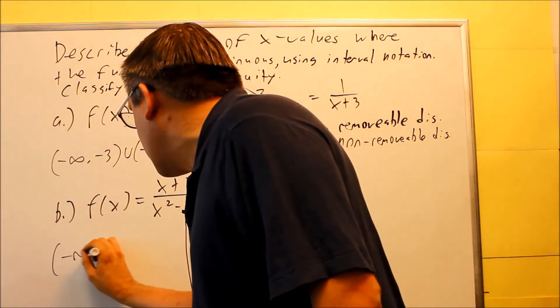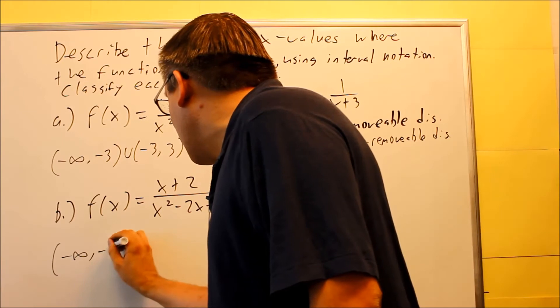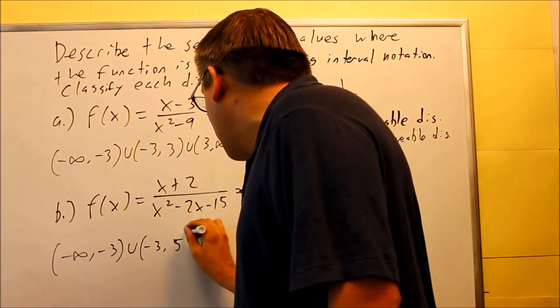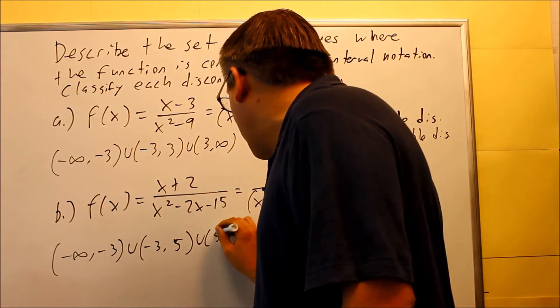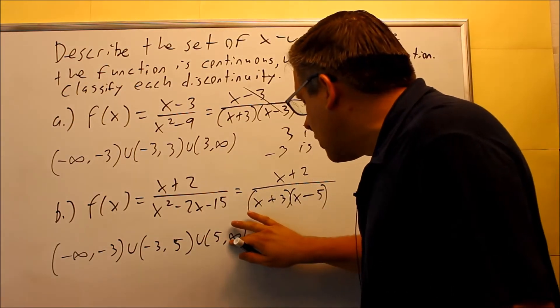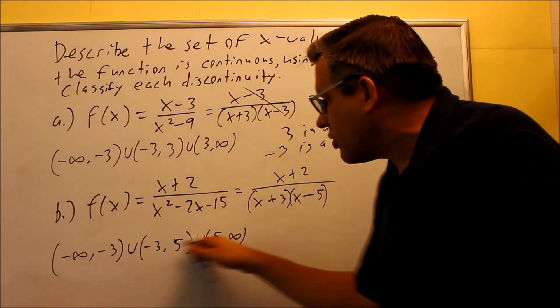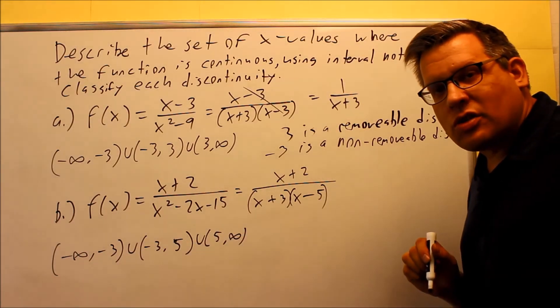we're basically going to say that we're going to include all numbers except for negative 3 and positive 5. So this is how that would look as far as interval notation is concerned. Negative infinity to negative 3, negative 3 to 5, and then from 5 to infinity. So that's the places where it's going to be continuous. As long as you're on one of these three intervals, that means it's continuous at that point.